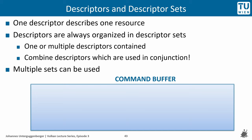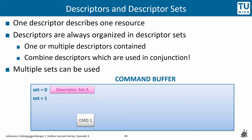A command buffer contains one or multiple commands to be executed on the GPU, and it is always a command buffer that is submitted to queues, not separate commands. For example, if a command buffer contains one command requiring resources in two different descriptor sets: the descriptors bound to set index 0 are contained in descriptor set A, and those for set index 1 are in descriptor set B. Within the command buffer, descriptor set A remains bound to index 0 and set B to index 1 as long as these bindings are not changed. Adding a second command that can reuse descriptor set A means no new set needs to be bound at index 0.